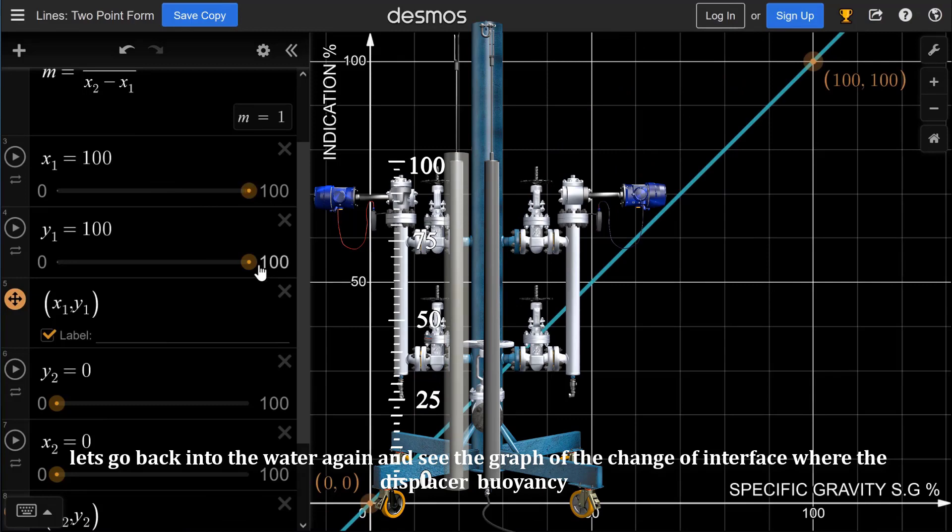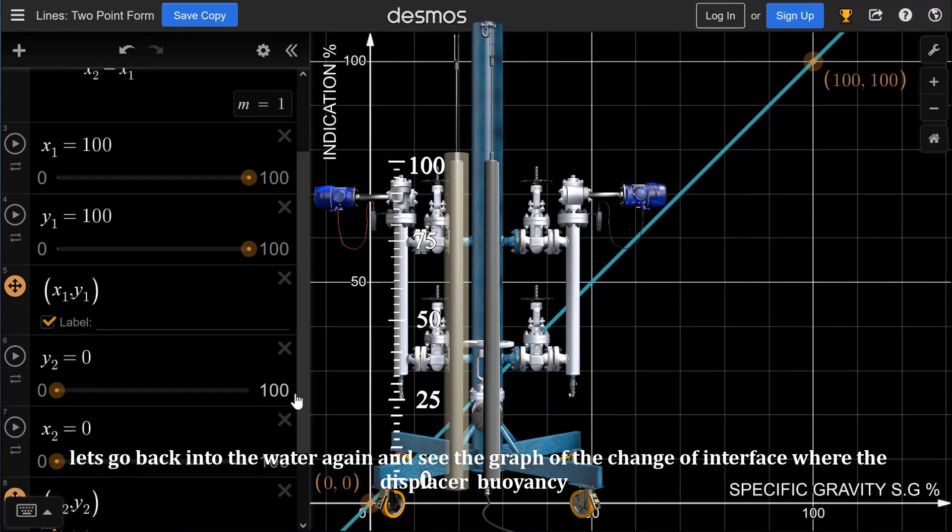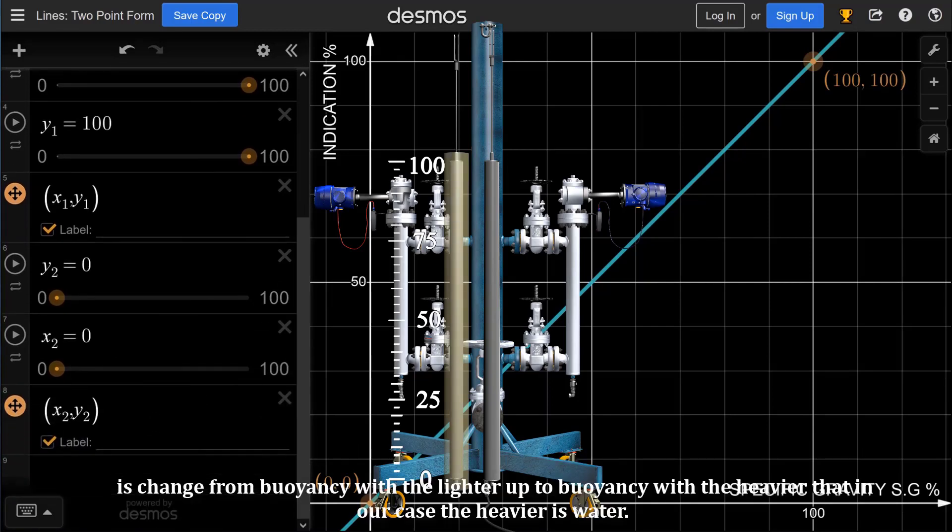Let's go back into the water again and see the graph of the change of interface, where the displacer buoyancy is changed from buoyancy with the lighter up to buoyancy with the heavier, that in our case the heavier is water.